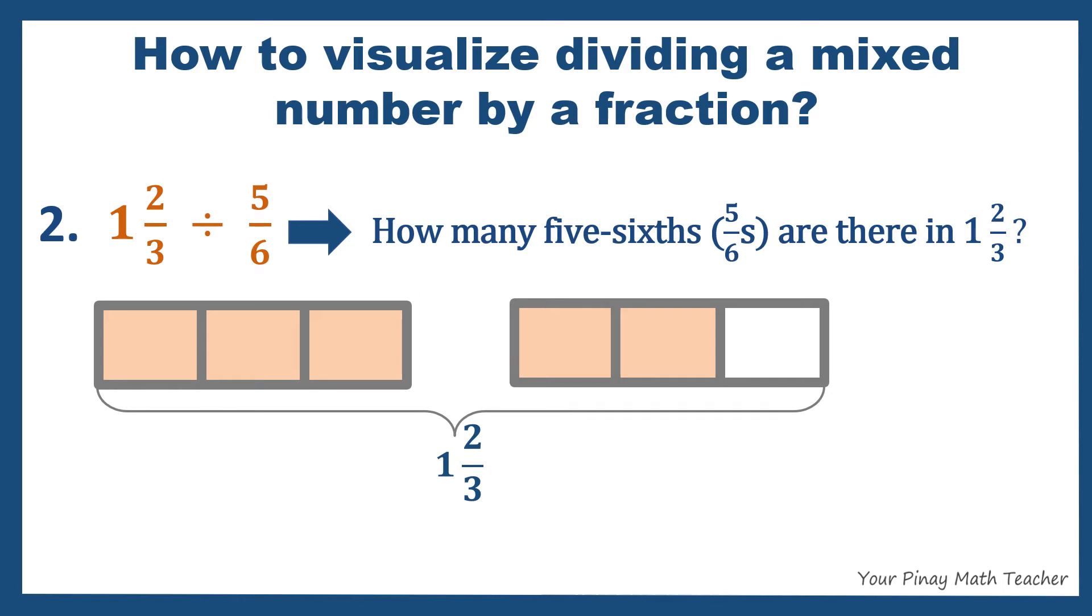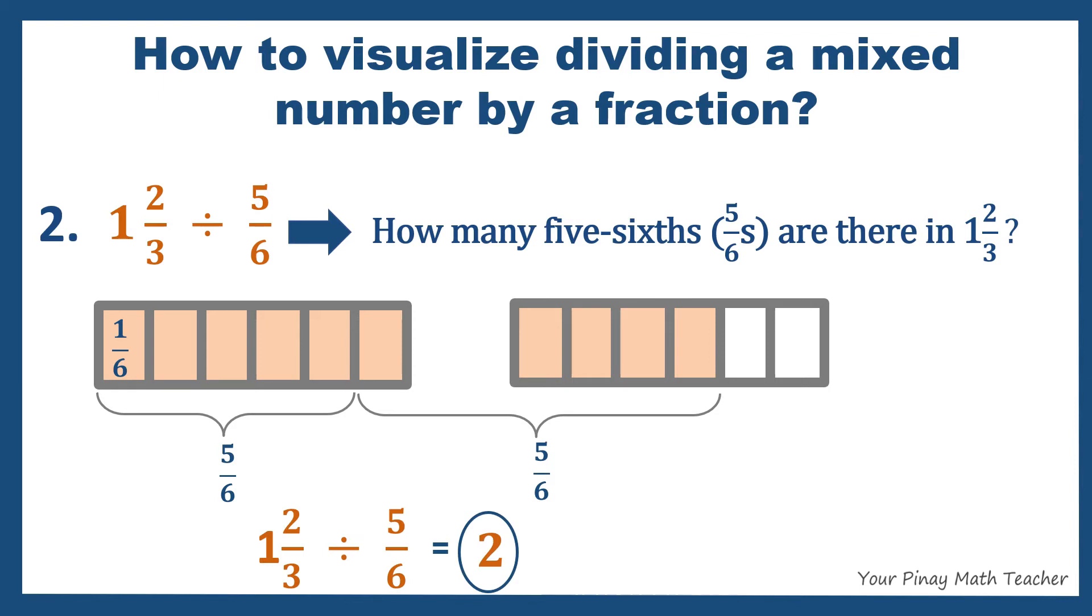Then let's divide the hole into 6 equal parts because we're going to group them by 5 sixths. So the first hole is divided into 6 equal parts and so with the second. Now let's group them by 5 sixths. So each equal part is 1 sixth. So 5 sixths consists of 5 equal parts. So 1, 5 sixths, another group of 5 sixths. So how many 5 sixths are there in 1 and 2 thirds? There are 2, 5 sixths.